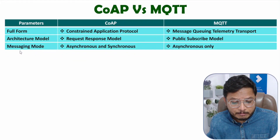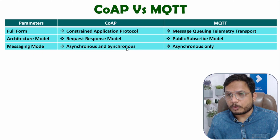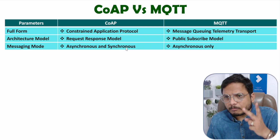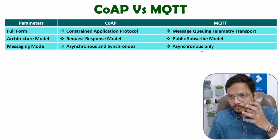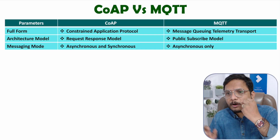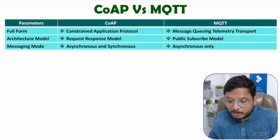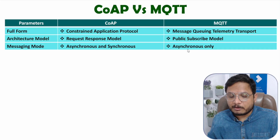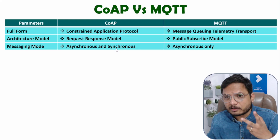The next parameter is Messaging Mode. With CoAP, we have both Asynchronous and Synchronous Messaging Modes. Both modes are supported, while with MQTT, only Asynchronous mode is available. In MQTT, the broker receives data from the Publisher and then publishes it to the Subscriber, so that will always be Asynchronous. With CoAP, there can be both Asynchronous and Synchronous Messaging Mode.